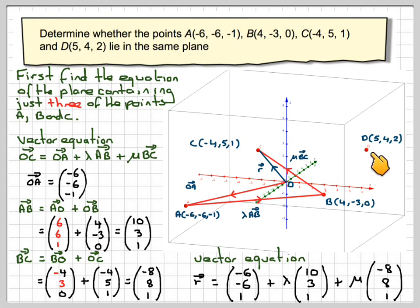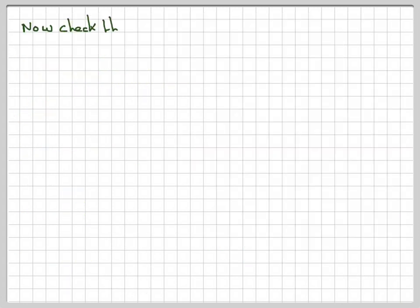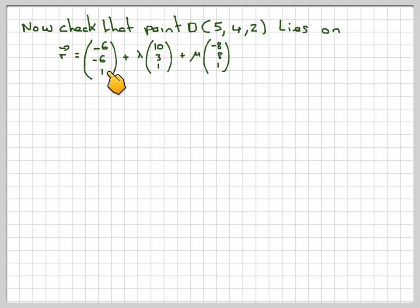So what we need to know is, does this point here actually lie in this plane that we've just calculated? So now check that the point D, our third point, lies on this particular plane. R is equal to (-6, -6, -1) plus lambda (10, 3, 1) plus mu (-8, 8, 1).